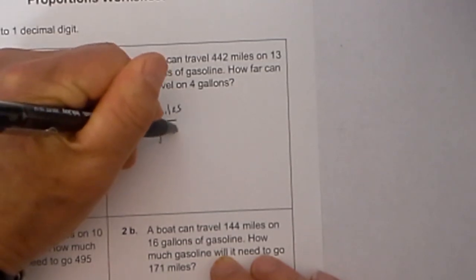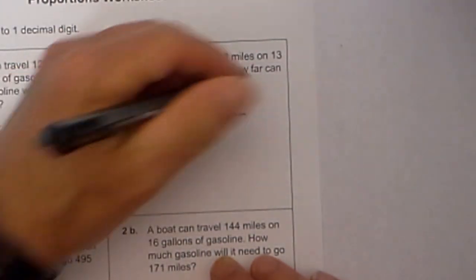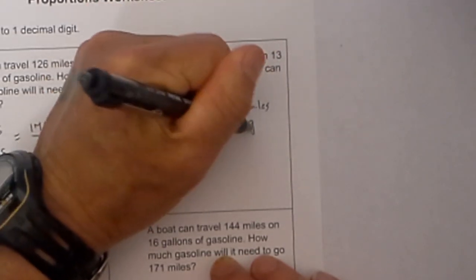I am going to put gallons on the bottom. Remember the most important thing is you set up the other fraction the same, and I am going to put miles and gallons.